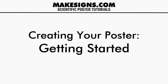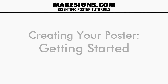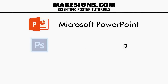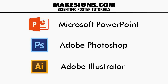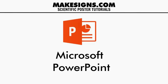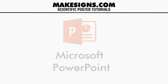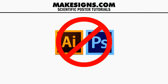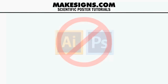The very first thing you need to do when making a scientific poster is decide which software to use. You've got several different options. Popular programs include Microsoft PowerPoint, Adobe Photoshop, or Illustrator. We prefer using Microsoft PowerPoint. It's incredibly easy to use, there are tons of free templates that you can download online, and just about everyone already has a copy of it. Adobe products are more geared towards graphic artists — they're expensive and they come with a huge learning curve. So stick with PowerPoint.